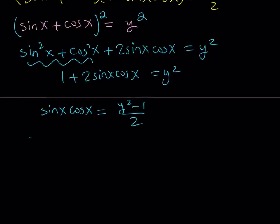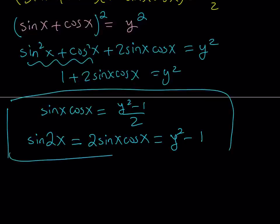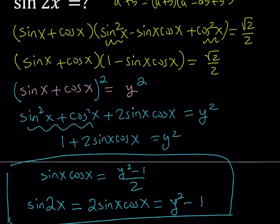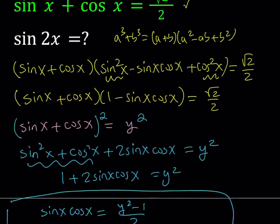Since we're looking for sine of 2x, we multiply both sides by 2. From the double angle formula, sine 2x equals 2 sine x cosine x, which equals y squared minus 1 in terms of y, where y equals sine x plus cosine x. So if we can find sine x plus cosine x, we can easily find sine of 2x. The next step is substituting everything into the factored form.